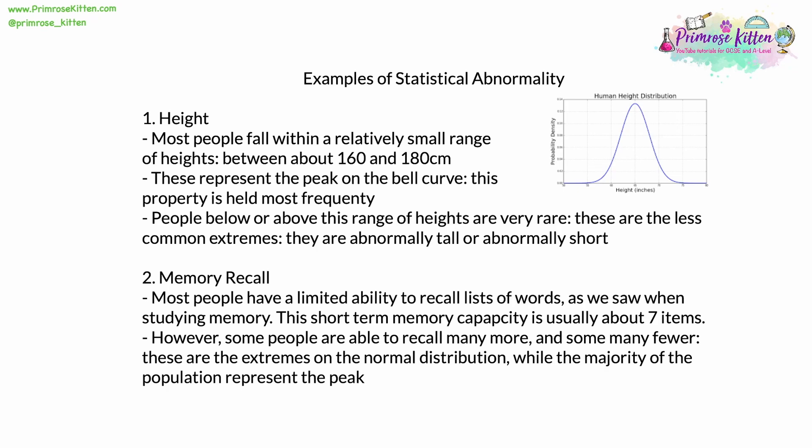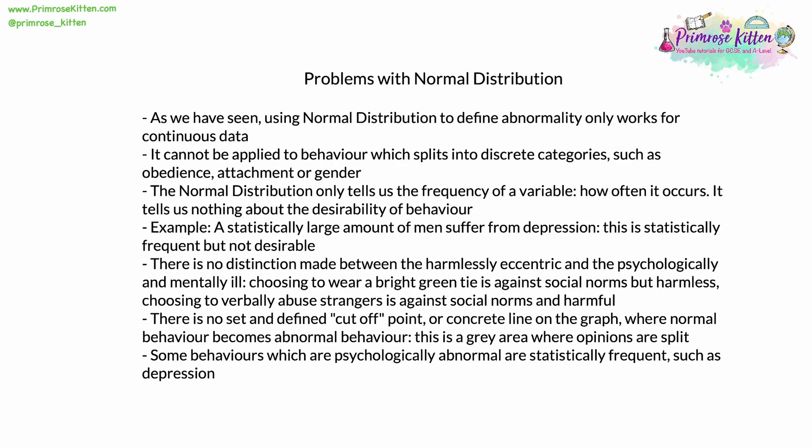For nearly any type of continuous data involving humanity, if you plot it as a graph, you tend to end up with a bell curve — like weight, which looks very similar to height. However, as with any description of abnormality, there are problems. Using a normal distribution to define abnormality only works for continuous data; it doesn't work if data is in separate discrete categories like hair colour or eye colour. Also, the normal distribution only tells us the frequency of a variable — it doesn't make any reference to the desirability of that behaviour.